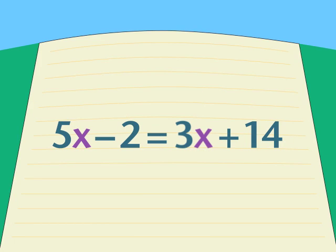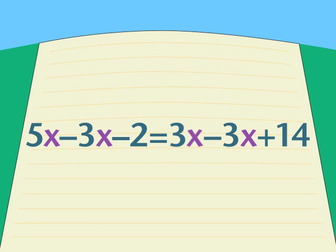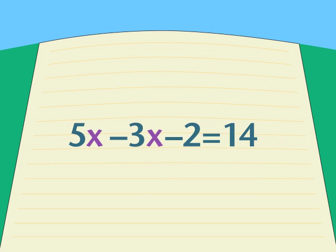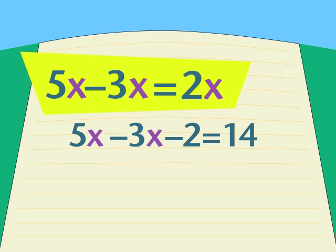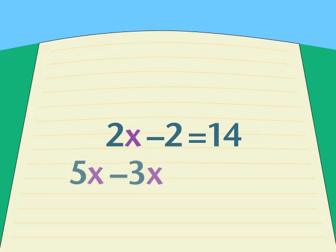Did your solution go something like this? Move 3x to the left, where it ends up as a negative 3x. Combine 5x and negative 3x. That gets us down to 2x minus 2 equals 14.